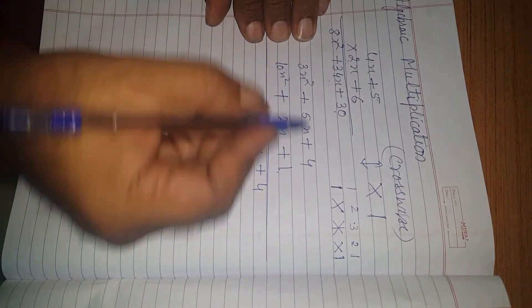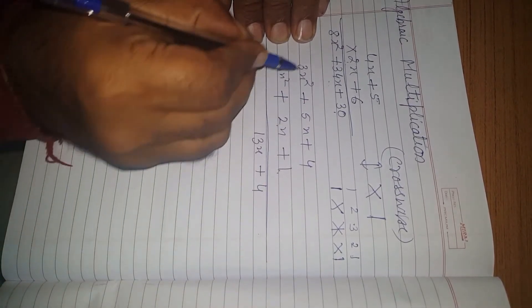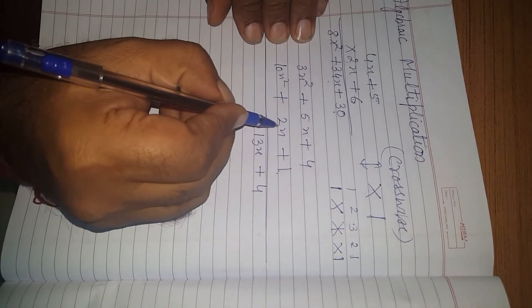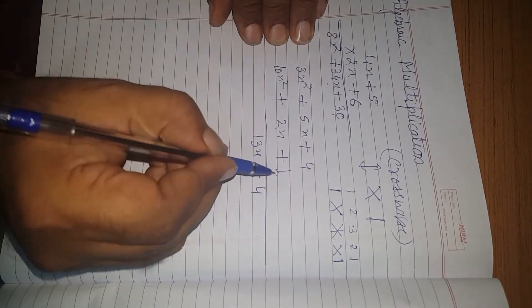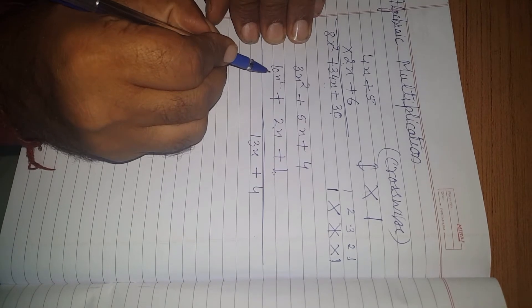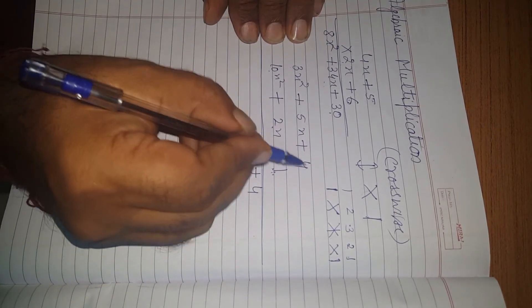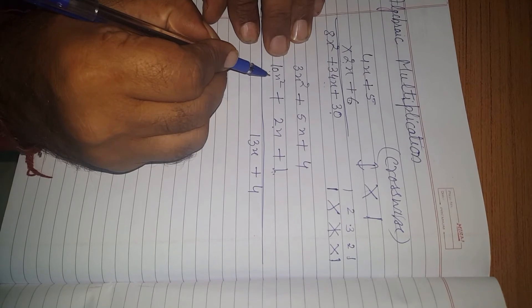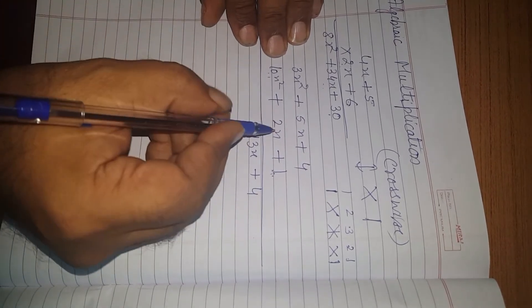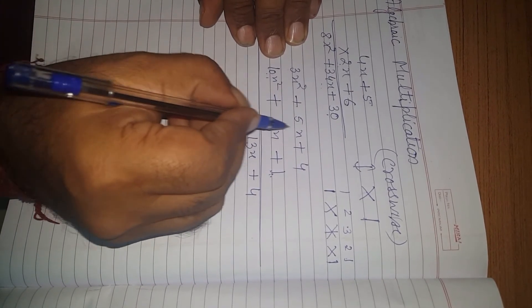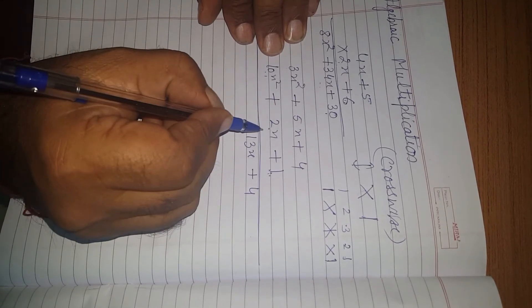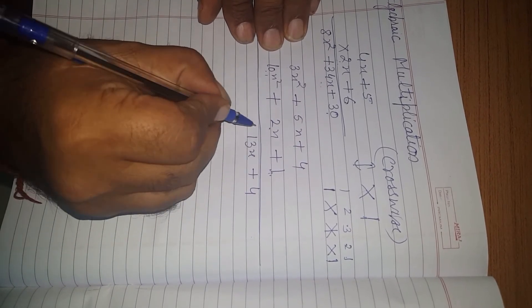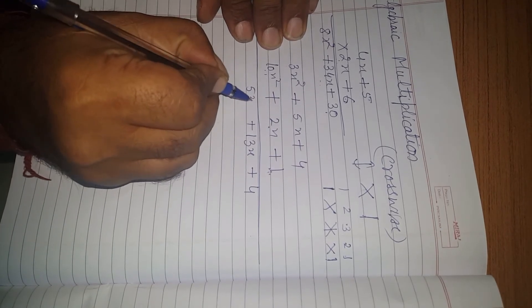Next step is the third step. Third step means last cross and in middle there is a vertical multiplication. So, 3x square into 1 is 3, 4 into 10 is 40, which gives 43. Plus 5 into 2 is 10. 43 plus 10 is 53x square.